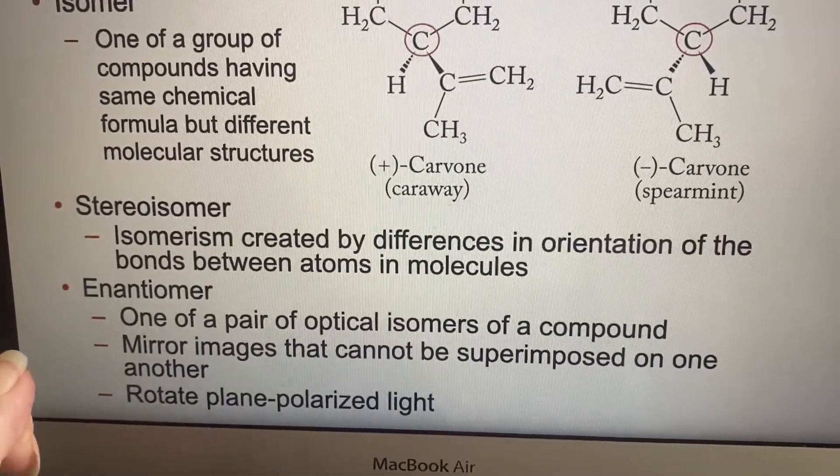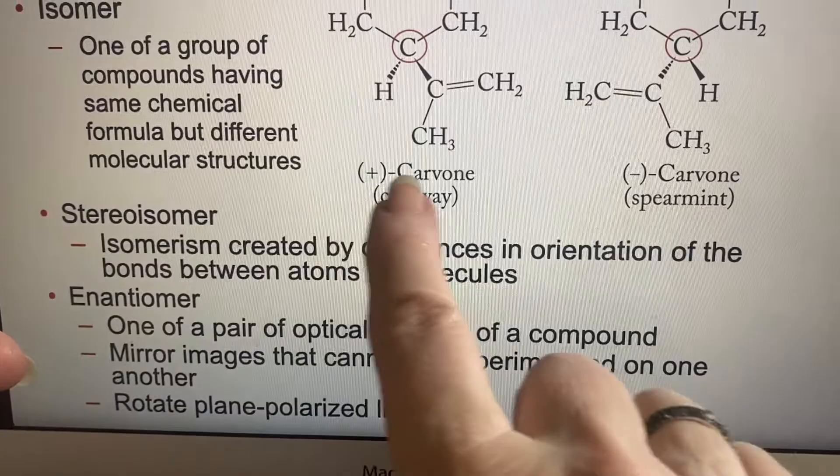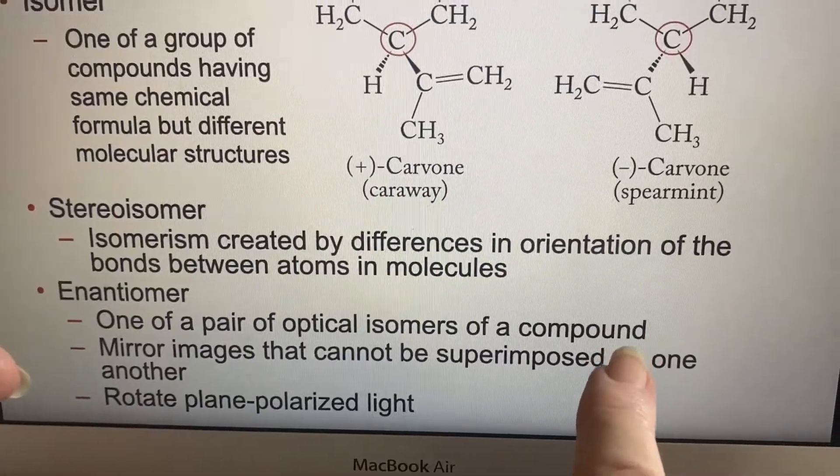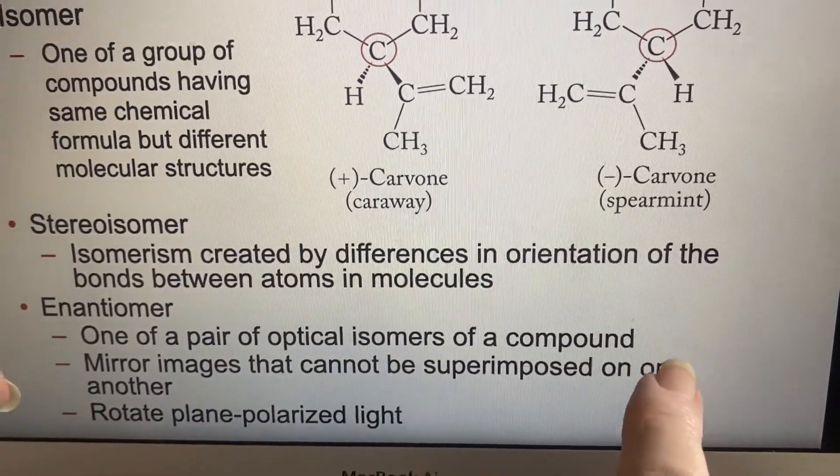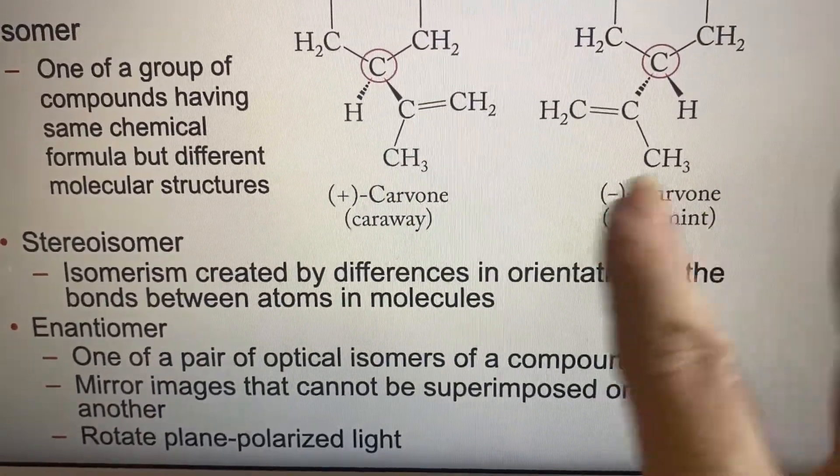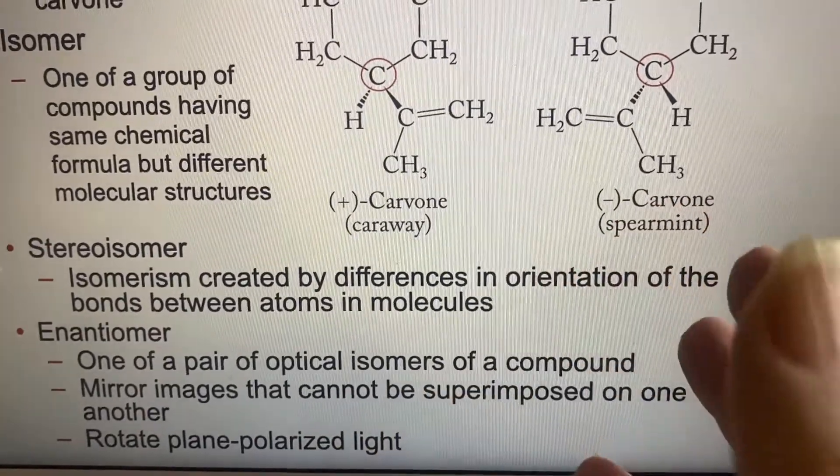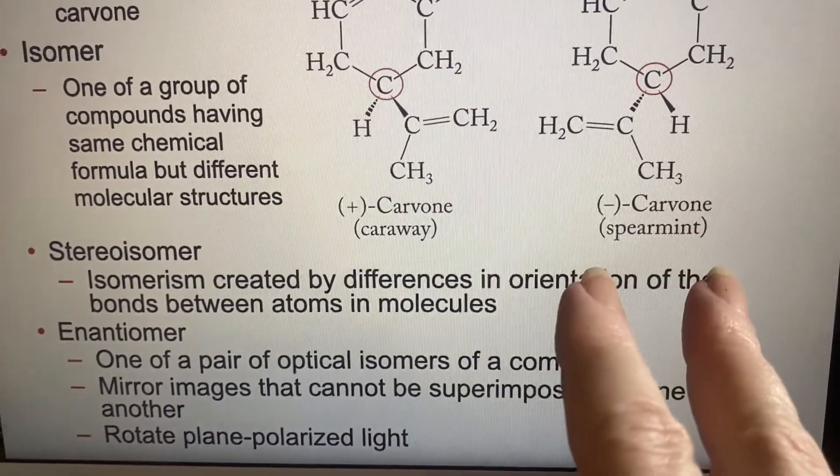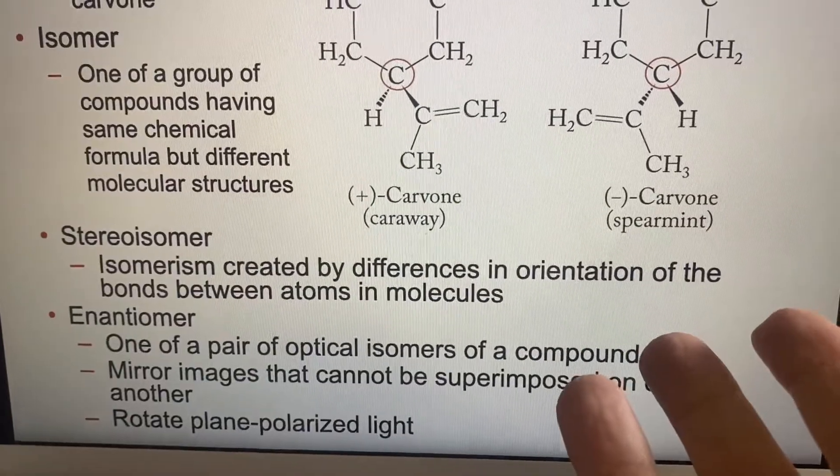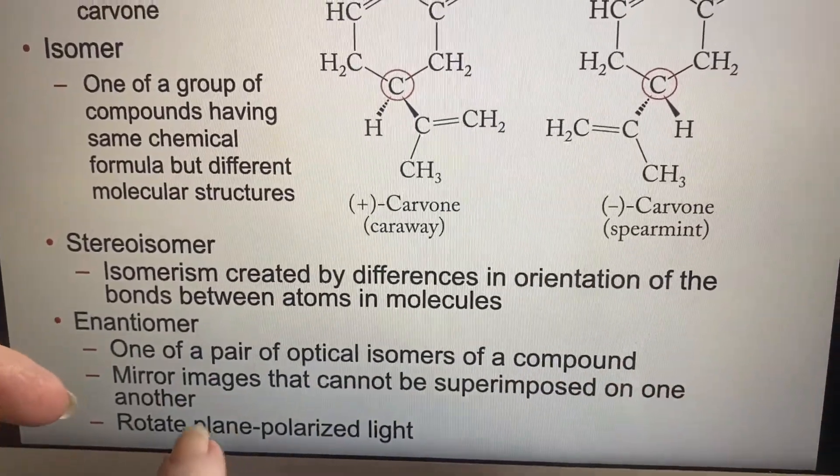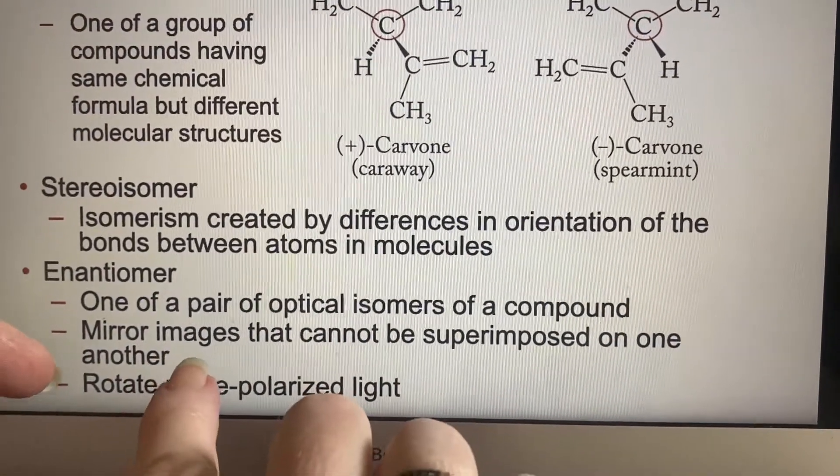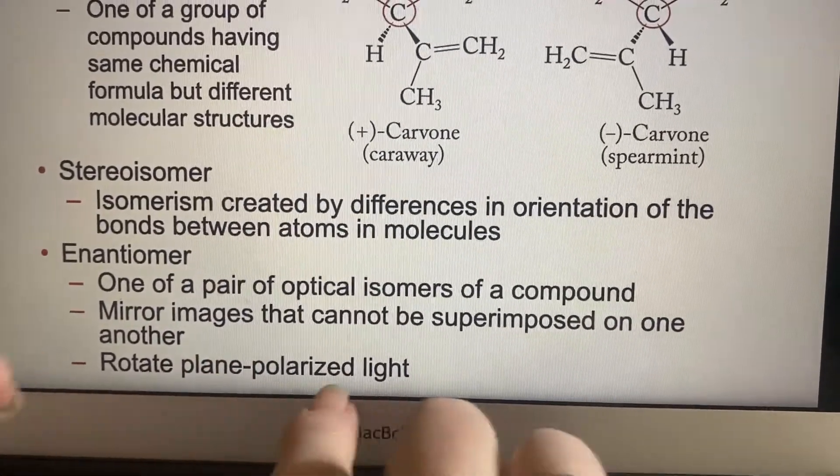And specifically, an enantiomer is optical isomers. Whenever you have this plus and minus that they put here, they are going to tell you about how it reacts with light. And light can be polarized. When it is, if you put it through a solution that contains a pure batch of the negative carvone, it will rotate to the left with the light's polarization. And the positive carvone will rotate the polarization to the right, which is very interesting. The point, though, is you are going to have to be able to tell one from another. These are mirror images. They can't be superimposed on one another, and they will rotate the light.